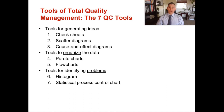The seven quality control tools fall into three subcategories: tools for generating ideas, tools to organize data, and tools to identify problems.